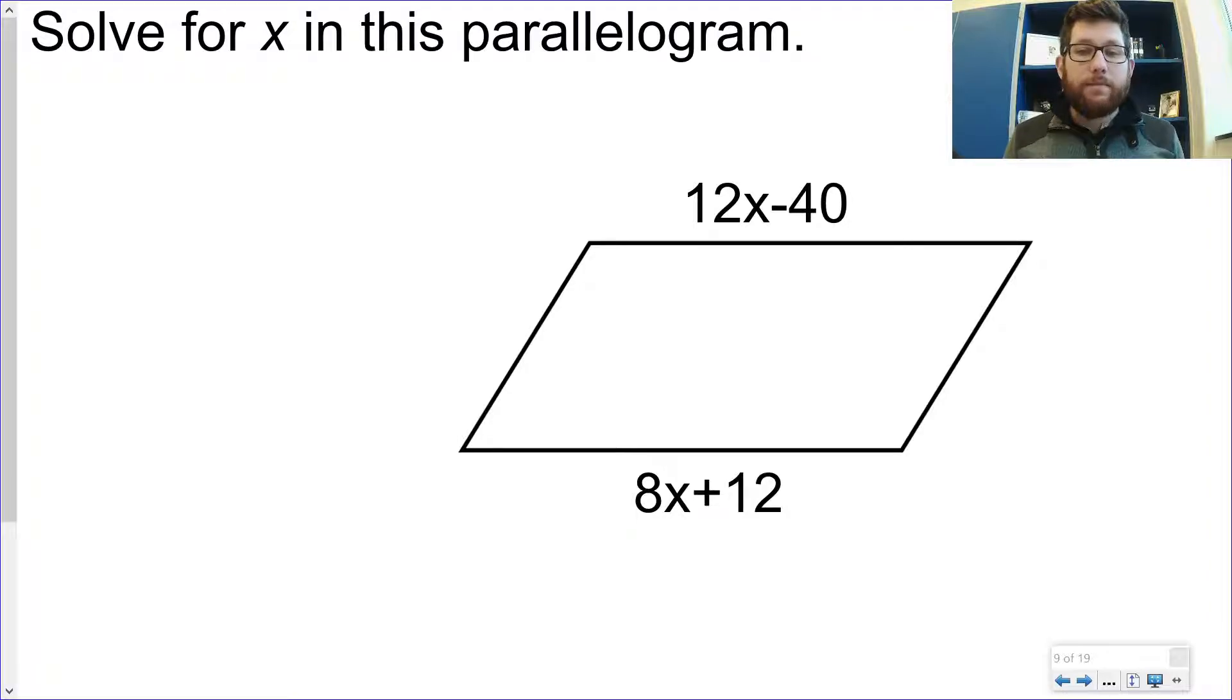Let's do one last one. We'll set it up. Solve for x in this parallelogram. Notice what's going on here. I've got a 12x minus 40 and an 8x plus 12. Notice how these are on the outside. That means I'm not dealing with angles anymore. It means I'm dealing with sides. And I know opposite sides are equal to each other. So I'm going to set this thing up.